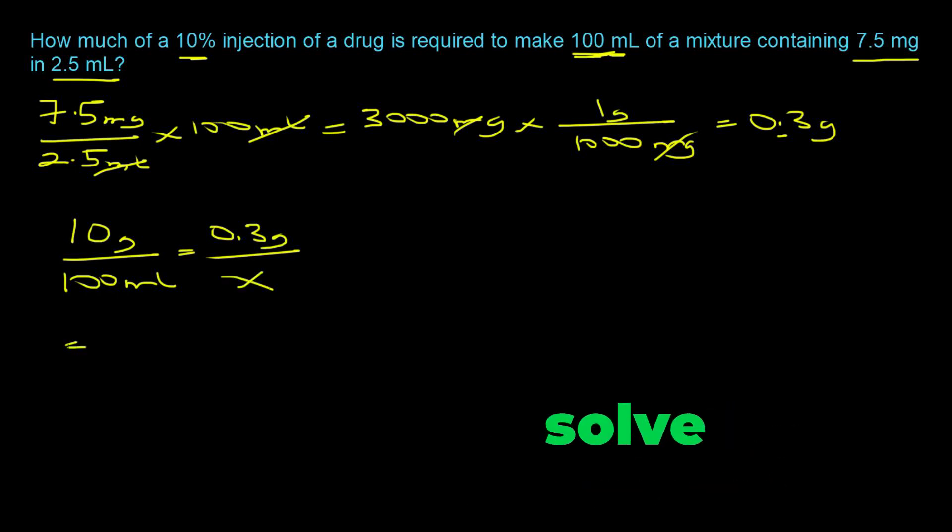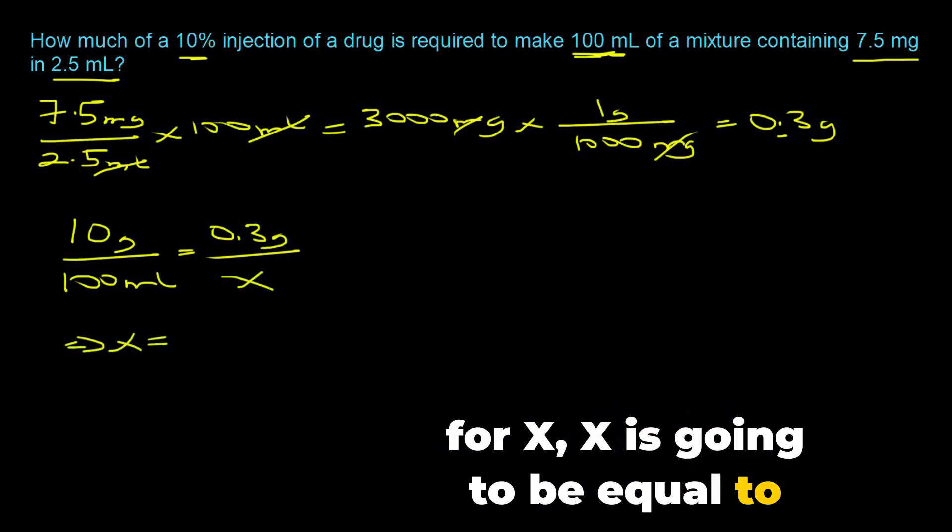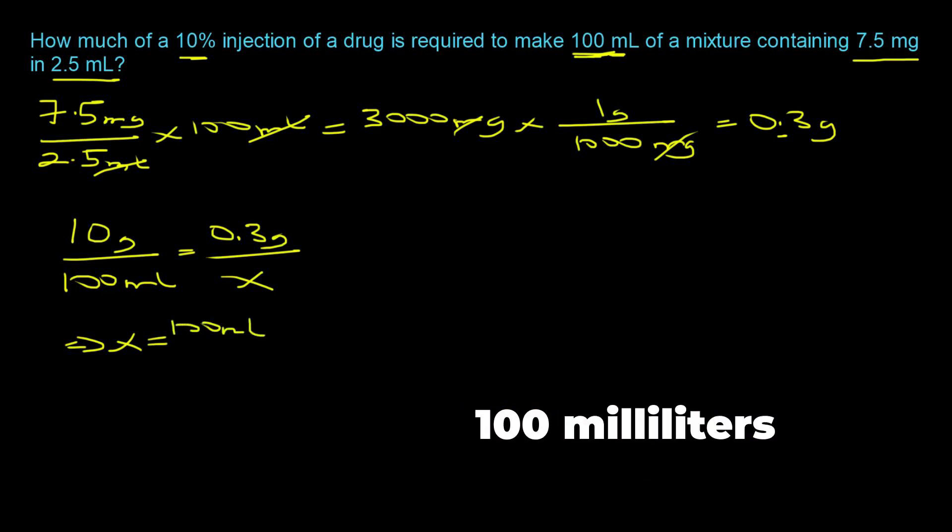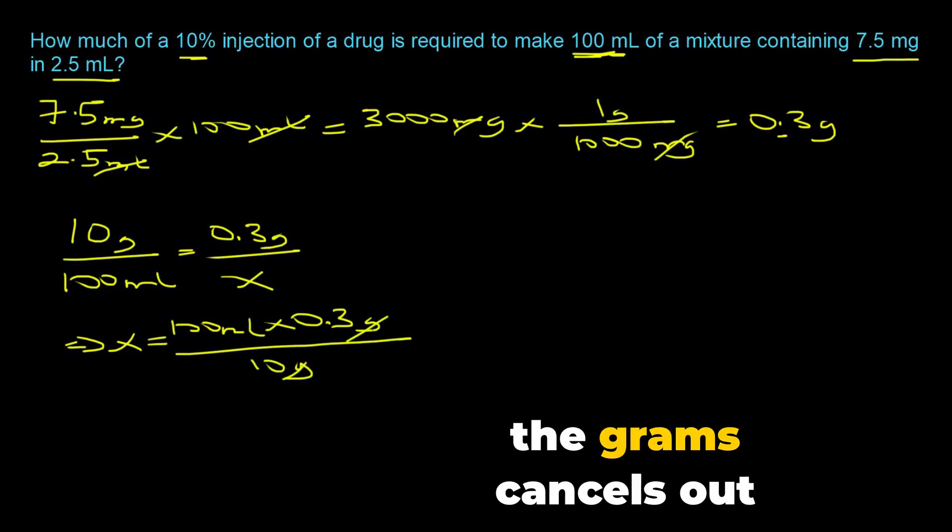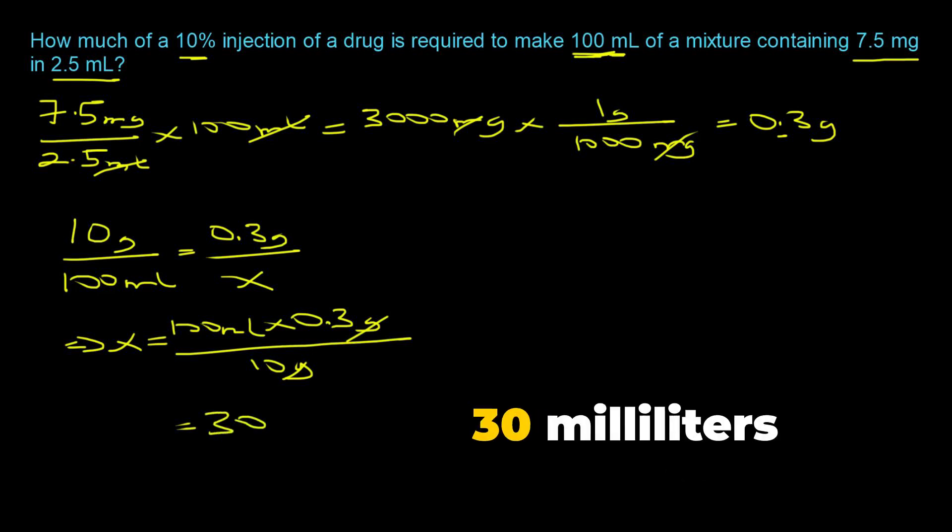So we solve for x. X is going to be equal to 100 milliliters times 0.3 grams divided by 10 grams. The grams cancels out and what you have is 30 milliliters of the 10 percent injection.